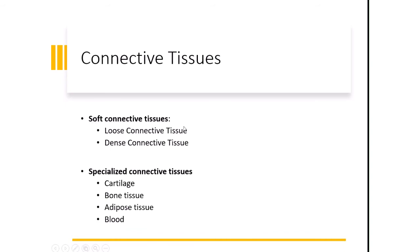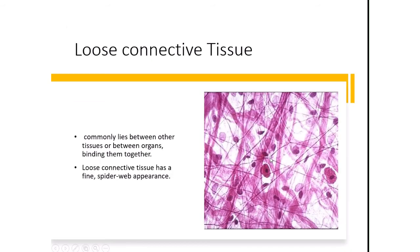There are two categories: soft connective tissues, which tape various structures together, and specialized connective tissues, which include cartilage, bone, adipose (fat tissue), and blood. Loose connective tissue is not very compact — it has relatively low density and is commonly found between other tissues and organs, helping bind them together. It has a kind of spider-web appearance with fibers as part of the matrix and cells loosely scattered throughout.